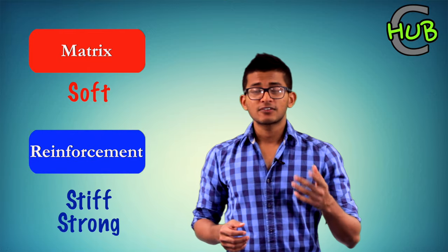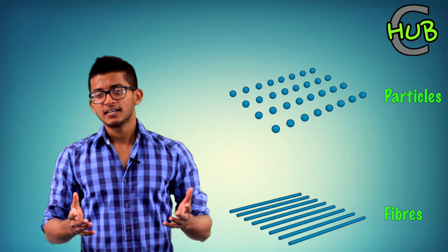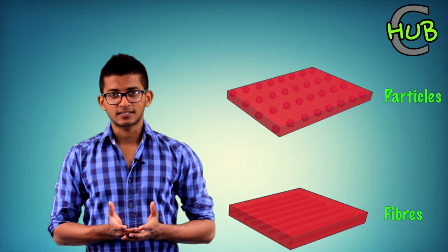Most composites are made from the matrix, which is a soft material, and the reinforcement, which is stiff and strong. Reinforcement usually comes in the form of particles or fibers, and it is completely surrounded by the matrix. Once combined, they give unique properties which are superior to the individual materials on their own.